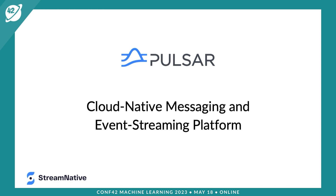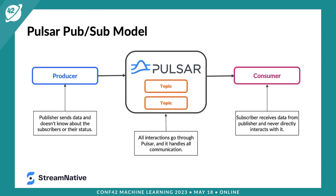Apache Pulsar was originally founded at Yahoo in 2012, and it was designed to be a cloud-native messaging and event streaming platform. It includes all the capabilities of traditional pub/sub messaging mechanisms like RabbitMQ or IBM MQ, and also includes a more modern event streaming model like Apache Kafka or Amazon Kinesis. It is designed to support both messaging semantics natively out of the box, with a pub/sub model by default.